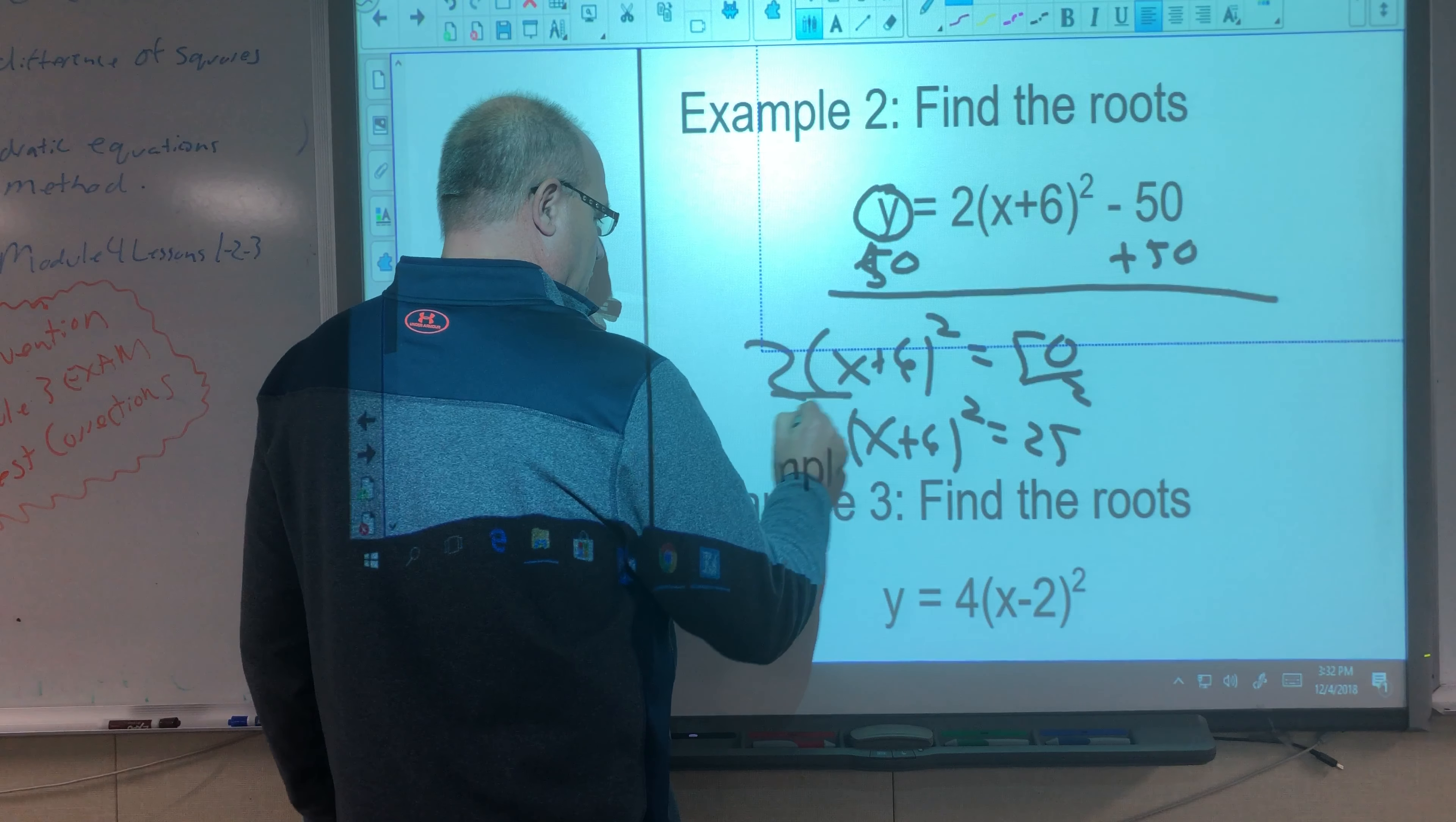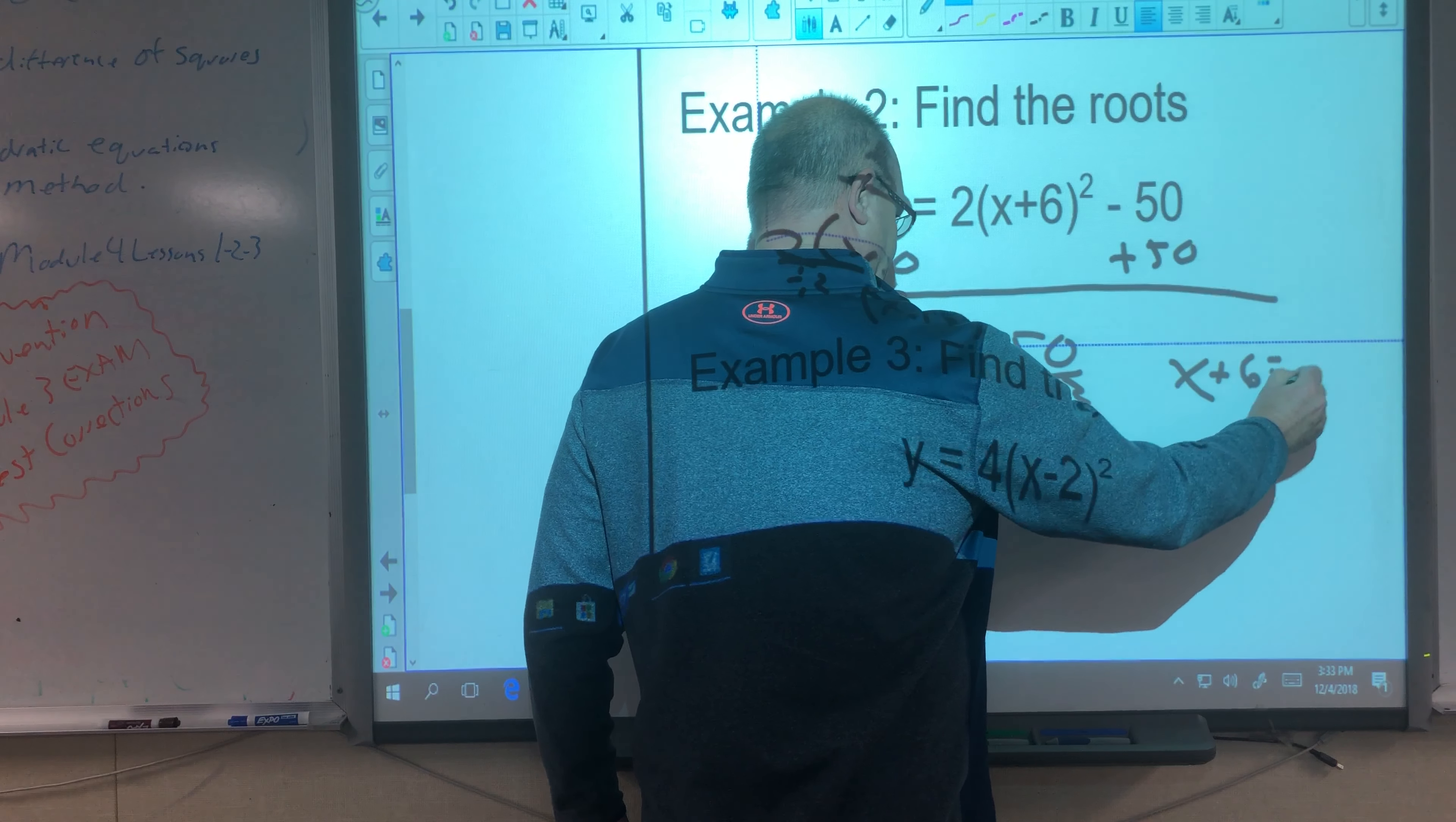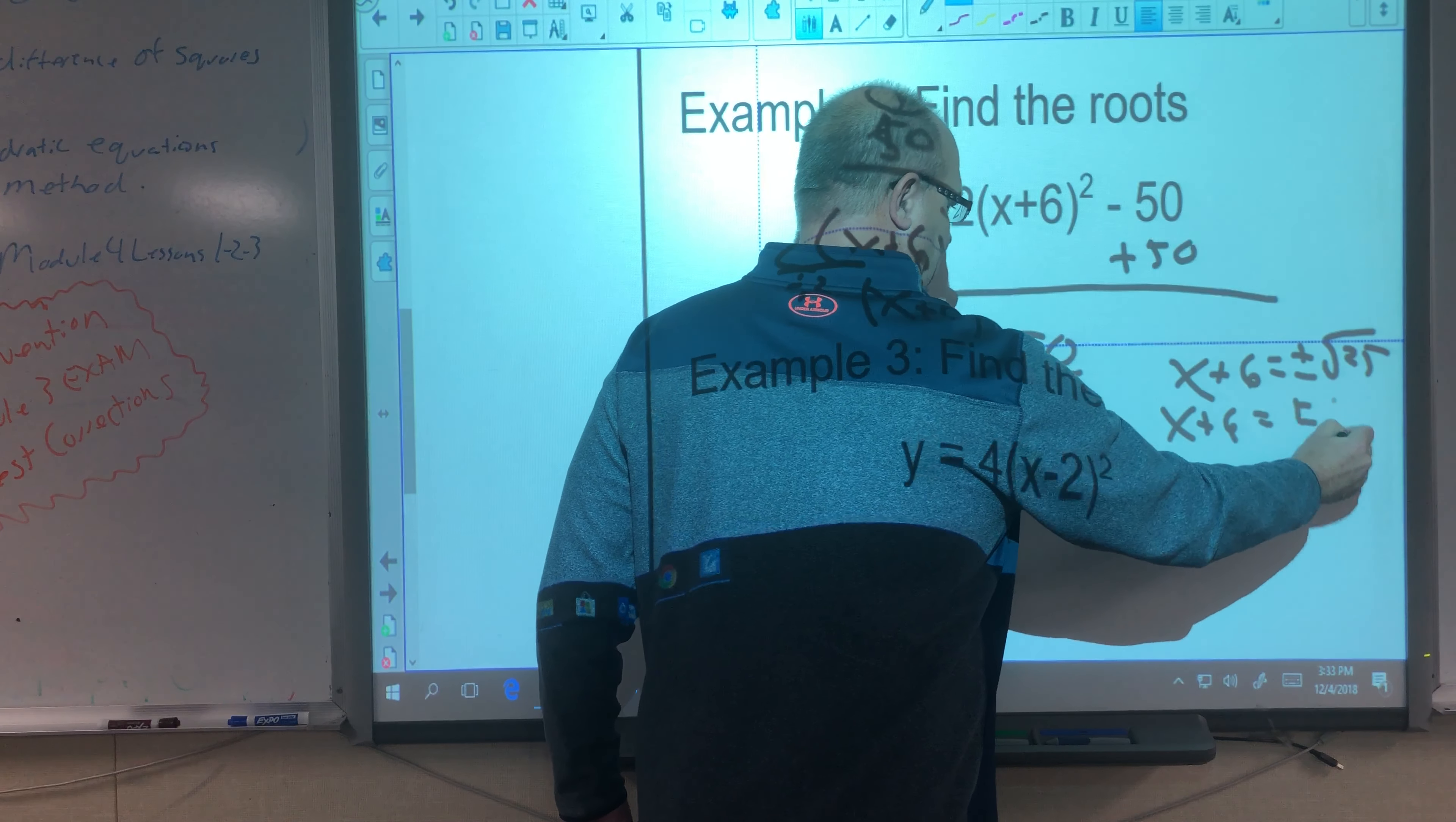I divide it by 2, divide by 2. Now I take the square root of both sides. So I get x plus 6 equals plus minus square root of 25. So x plus 6 equals plus minus 5.